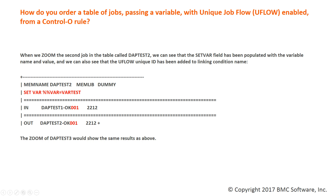When we zoom the second job in the table called DAPTest2, we can see that the set var field has been populated with the variable name and value, and we can also see that the unique flow ID has been linked to the linking condition names. A zoom of DAPTest3 would show the same results.